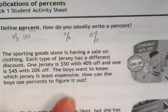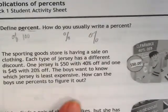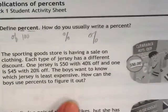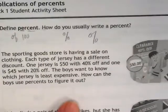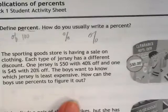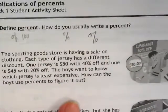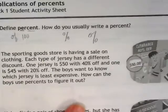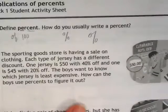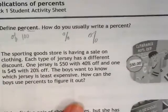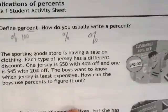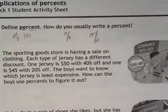Okay, so we have a sporting goods store that's having a sale on clothing. Each type of jersey has a different discount. Why? Because that's confusing. Stores don't do that. One jersey is $50 with 40% off and another jersey is $45 with 20% off. The boys want to know which jersey is the least expensive. How can they use percents to figure it out?